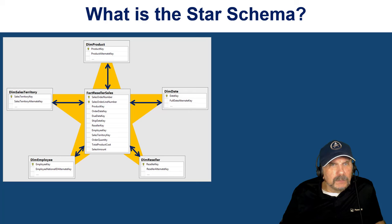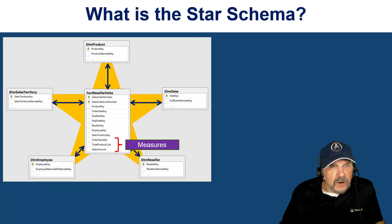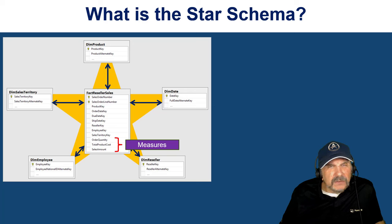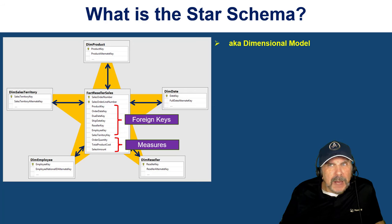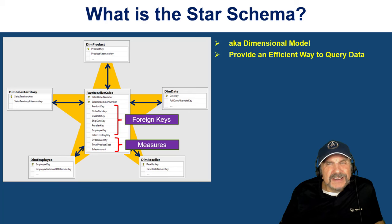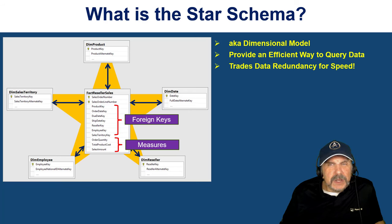A key takeaway here is that we can get to any of the dimensions with a single join from the fact table. The measures — order quantity, total product cost, and sales amount — are what we're really interested in, but they're meaningless unless we can organize them by the dimensions. To get to the dimensions, we use the foreign keys to connect us to the dimension tables. The result of dimensional modeling is, in fact, a star schema. The nice thing about the star schema is it provides an efficient and easy way to query data — it does trade off data redundancy to get more efficiency, speed, and ease of use for the end user.